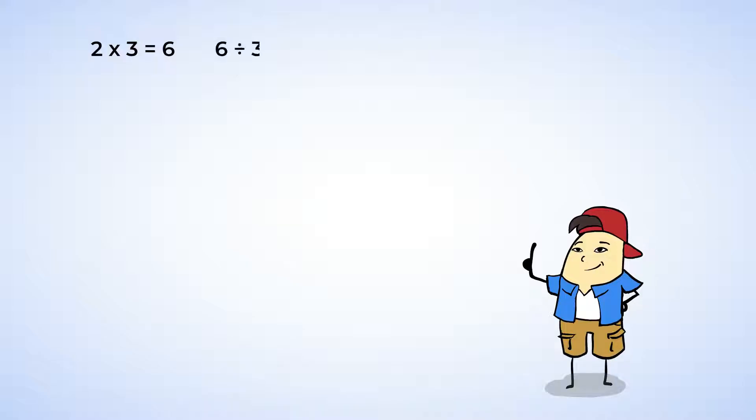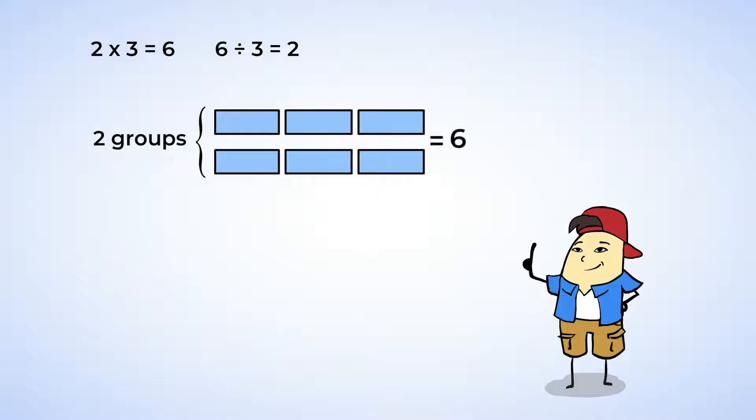But this can also be written as six divided by three equals two. We can think about it as groups. Two groups of three makes a total of six, or a total of six divided into groups of three makes two groups.